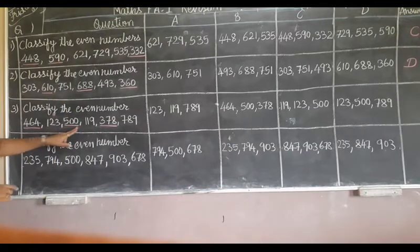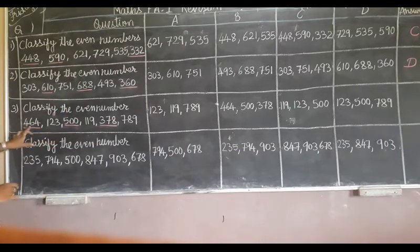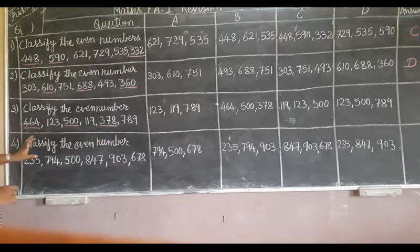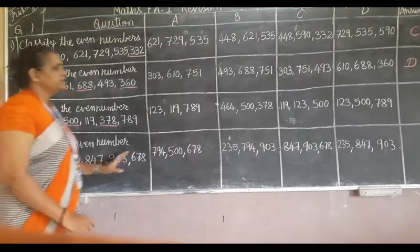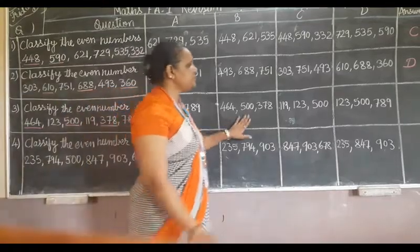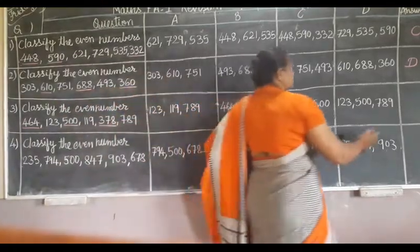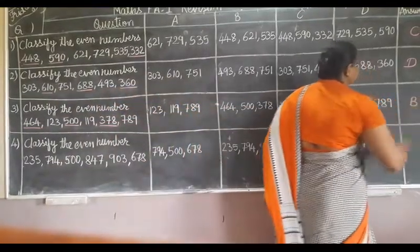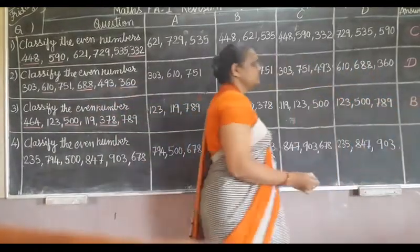These 3 are the even numbers: 464, 500, 378. D option is the right one. Clear?